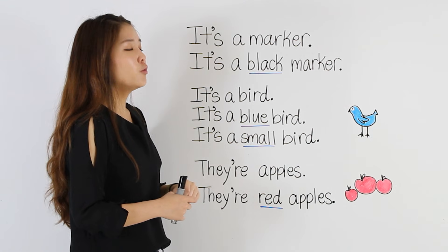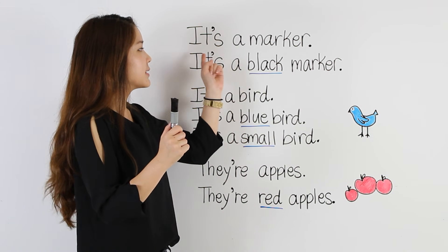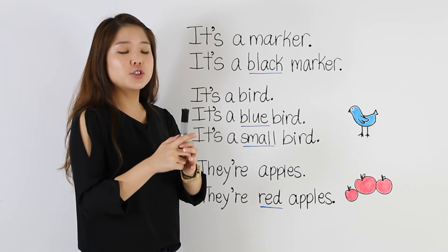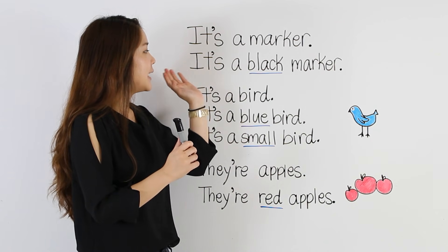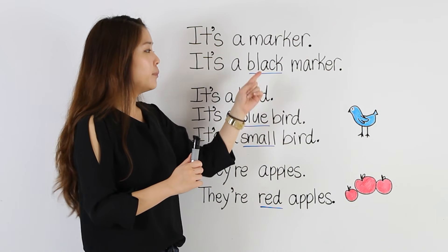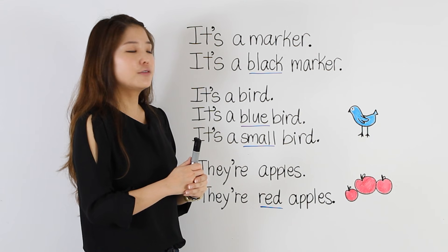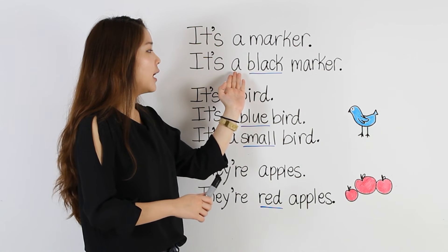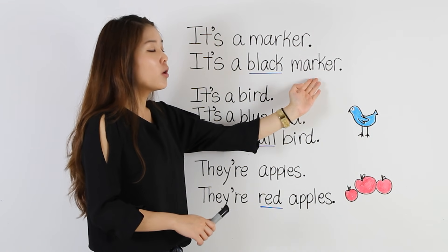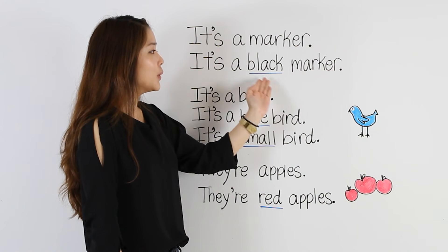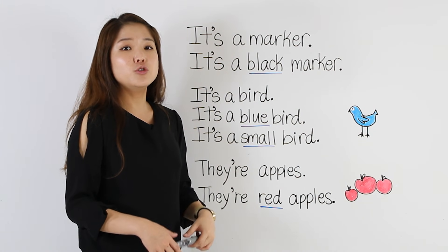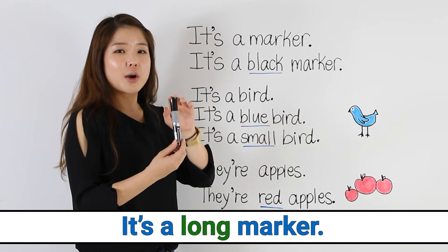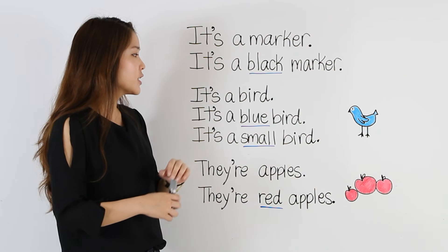The first noun we're going to use is marker. It's a marker. I want to use an adjective to describe the color. I'm going to say, it's a black marker. Black is the adjective. Notice I have to put the adjective after the article 'a', but before the noun marker. It's a black marker. I can also use another adjective to describe its size: it's a long marker.